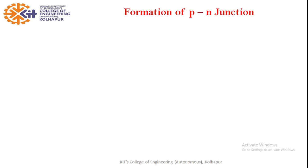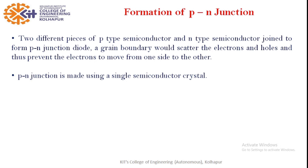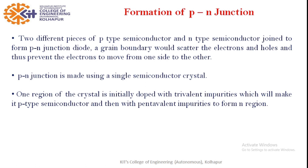So what is the p-n junction? When a p-type semiconductor is connected to an n-type semiconductor, we say that a p-n junction is formed. Remember that it is not an ohmic contact — the p-type and n-type semiconductors do not just touch each other. When the junction is formed, there is transfer of charge carriers across it. The p-n junction is made using a single semiconductor crystal, doped with trivalent impurity on one side to form p-type and pentavalent impurity on the other side to form n-type.